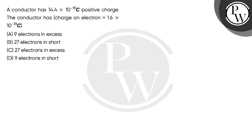Hello boys, let's read the question. A conductor has 14.4 × 10^-19 coulombs positive charge. The conductor has charge on electron equal to 1.6 × 10^-19 coulombs.